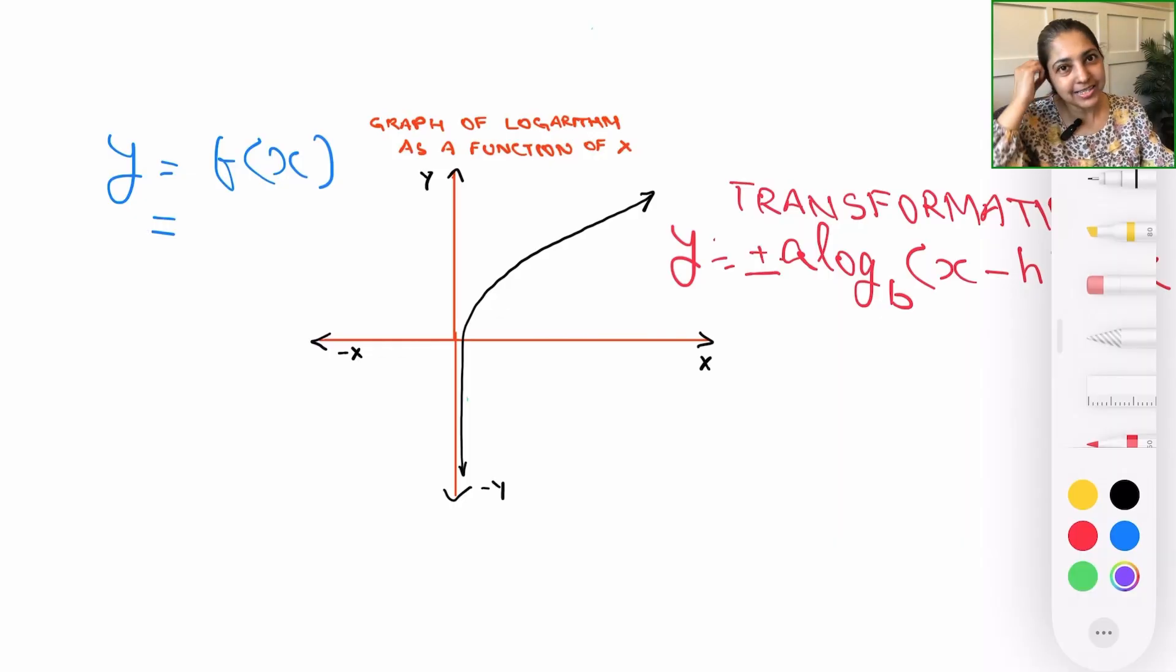We will also employ transformations to graph these functions so that we incorporate the vertical shifts, horizontal shifts, reflections, and so on and so forth. Let's solve some examples and play around a little bit to understand what this graphical representation is about. All right, I'll see you around. So let's go ahead and get started.